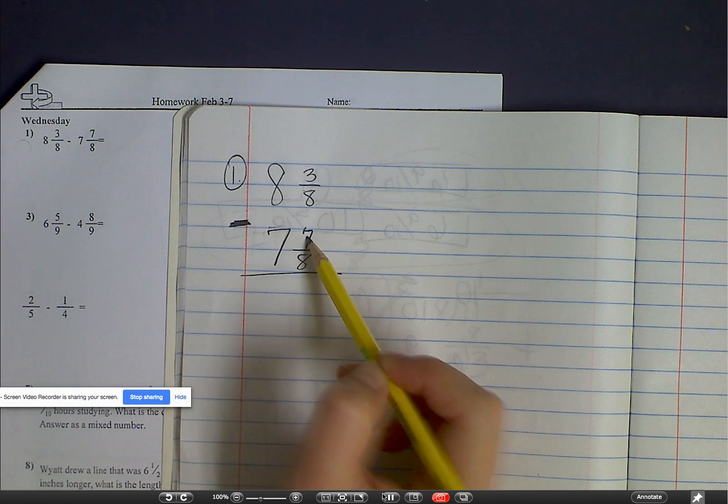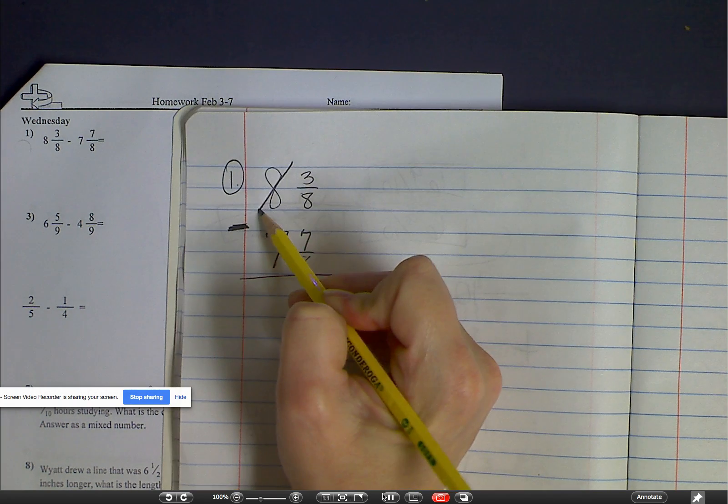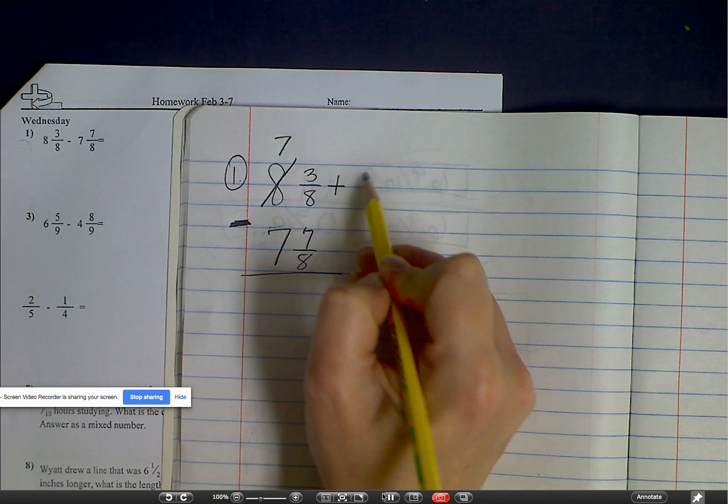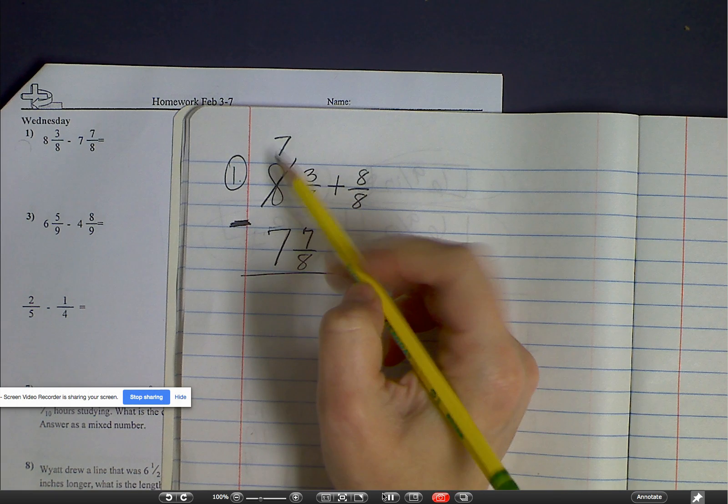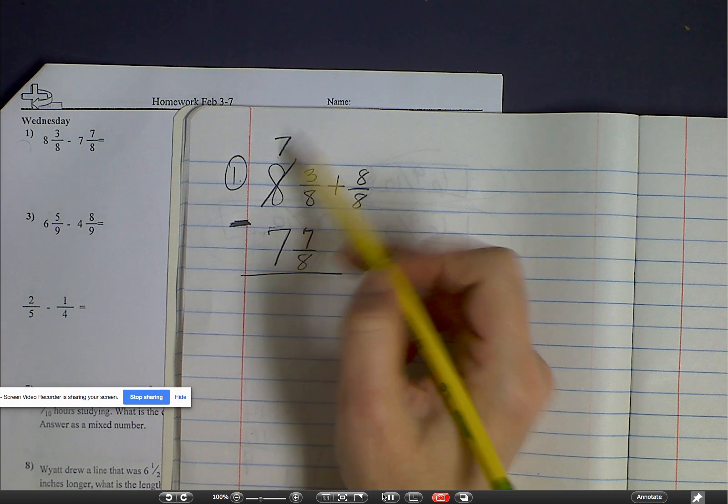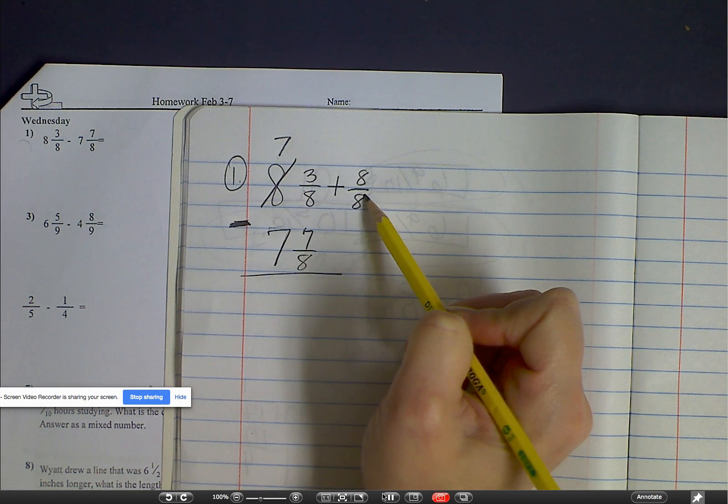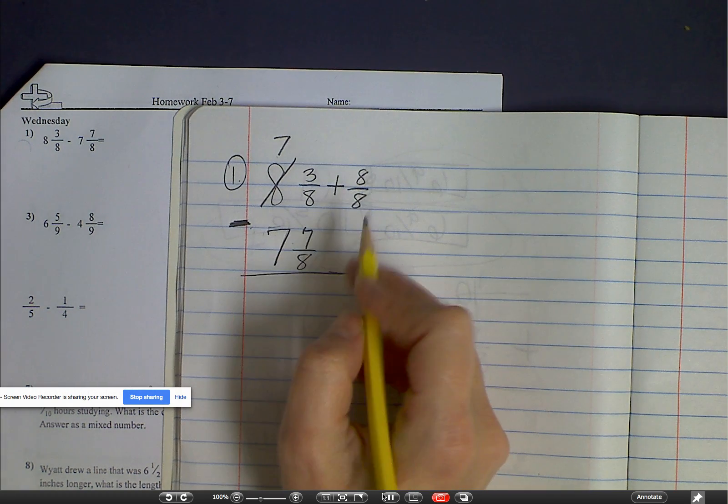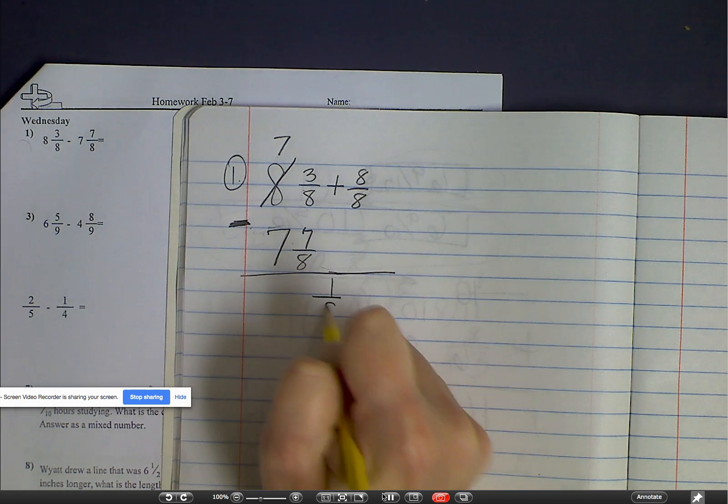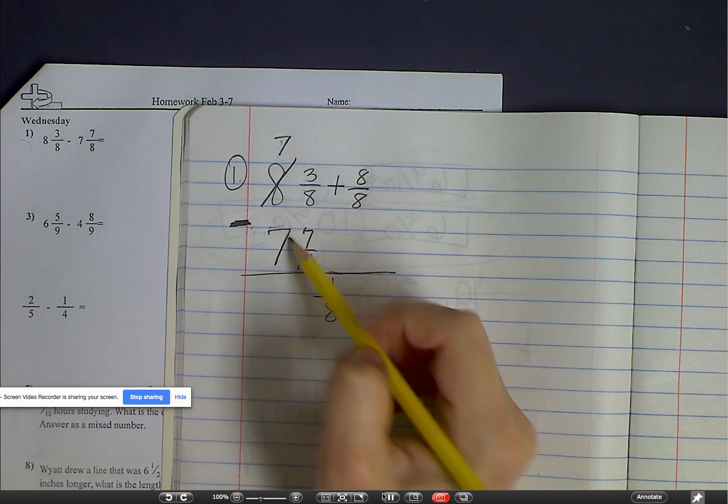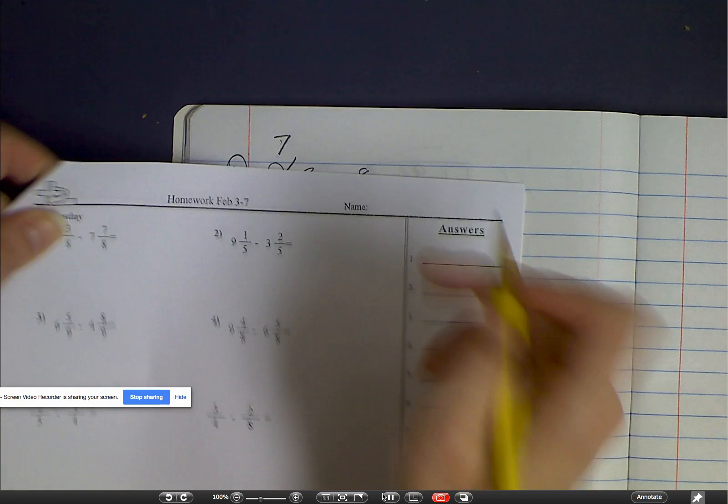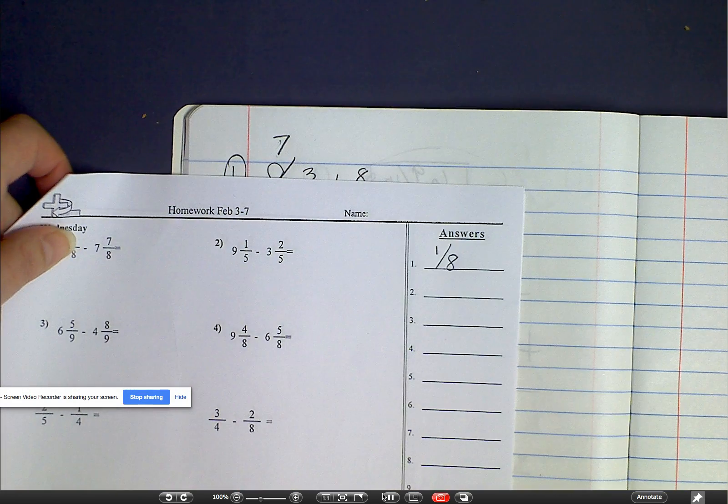Three minus seven you can't do, so you're going to cross this out and this becomes a seven. And then I'm going to add eight over eight, because remember, we took one from here and basically we just traded it in for one over here as a fraction. Now I can subtract. Eight minus seven is one. And then keep my denominator. Seven minus seven is just zero. So the answer for number one is one-eighth.